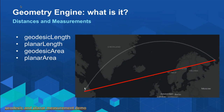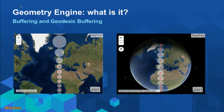The last category is distances and measurements. There are two flavors of each: length, area, and buffering all have a planar version and a geodesic version. Planar takes the distance on an assumed flat surface. Geodesic assumes the curvature of the earth. We'll talk about when you might use one versus the other, because there are use cases for both. For buffering, you can create buffers around points, lines, or polygons and use those for visualization, analysis, or editing.